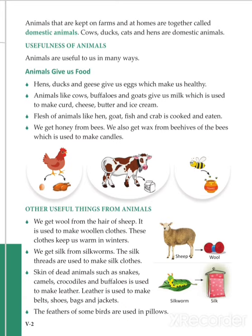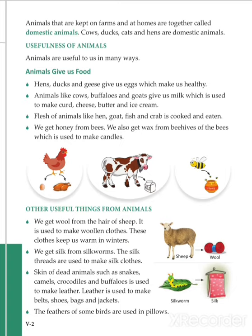The skin of dead animals like crocodile, snake, camels, and buffaloes is used to make leather. This leather is used to make different items like belts, shoes, bags, and jackets. The feathers of some birds are also used as pillow stuffing.